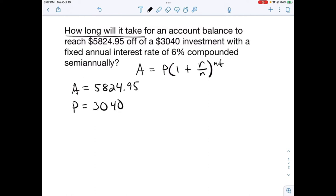P is your initial investment, which was the $3,040 investment. The interest rate r is 6%, which we will convert into a decimal, 0.06.